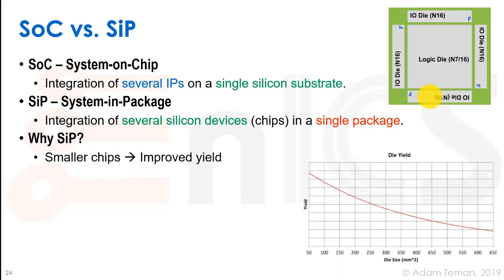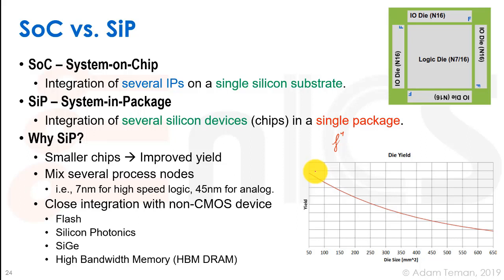Why use system in package? If we take a chip and make it really, really big, our yield goes way down — to the fourth power, something like that. So as the size of the chip increases, the yield goes down. When we use a system in package, we can make much smaller dies and achieve much higher yield for each individual chip.